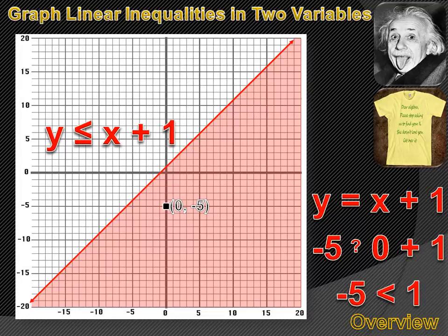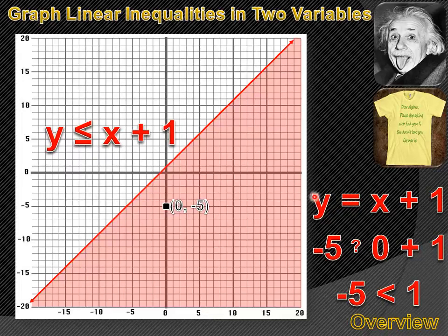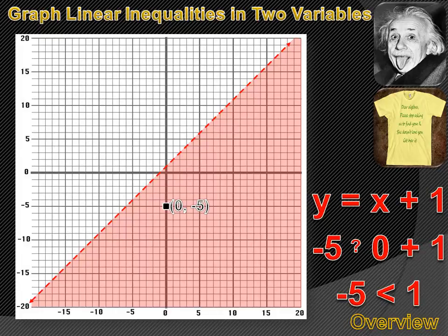y is less than or equal to x plus 1 includes the boundary line y equals x plus 1 and all points where y is less than that boundary line. But what if we didn't want to include that boundary line? What if we wanted to say y was less than x plus 1 — where the line is not part of the solution set, just the points below it? We'd replace the solid line with a dotted line to indicate it's not part of the solution set, and write it as y is less than x plus 1.